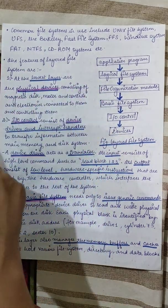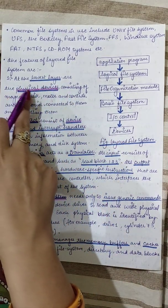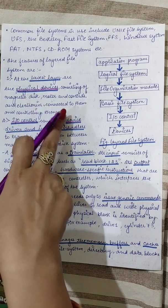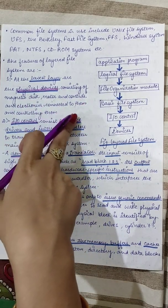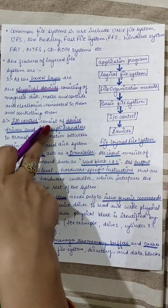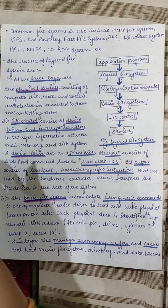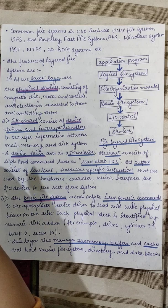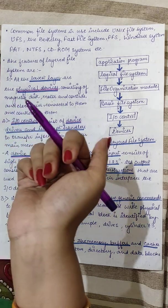Starting with the features of each layer: the devices layer is the lowest layer consisting of physical devices — magnetic disks, motors, controls, and electronics connected to and controlling them. Devices include all hardware devices: magnetic disks, magnetic tapes, their motors, controls, and connected electronics. This is the devices part in the lowest layer of the layered file system.